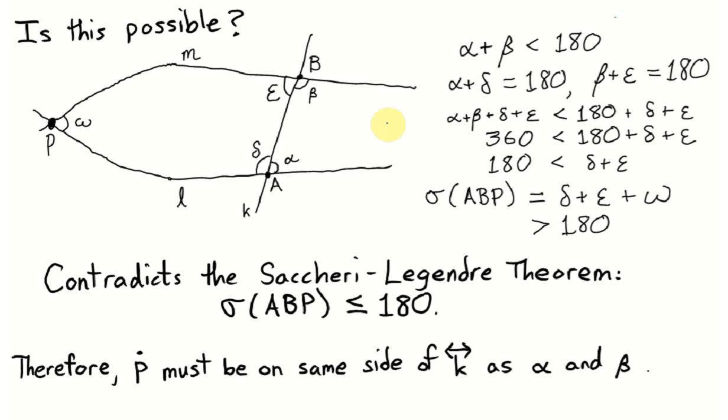To show that the point of intersection is on this side of alpha and beta, we'll do a proof by contradiction. We'll assume, to the contrary, that the point P is on this side of K, opposite from alpha and beta. Now, by the linear pair theorem, we know that these angles marked alpha and delta add to 180. We also know that beta and epsilon add to 180. And since alpha plus beta is less than 180 by hypothesis, if we add delta and epsilon to both sides, on the left-hand side of this inequality, we have alpha plus beta plus delta plus epsilon. That sums to four right angles, what we would call 360 degrees. By a little bit of subtraction, we have that 180 is less than delta plus epsilon.